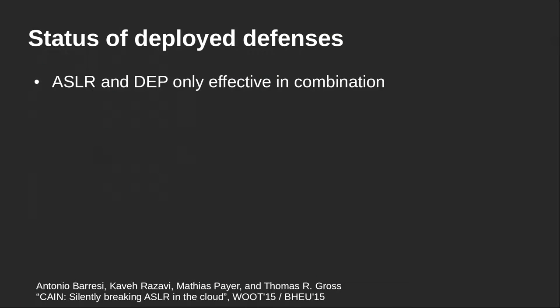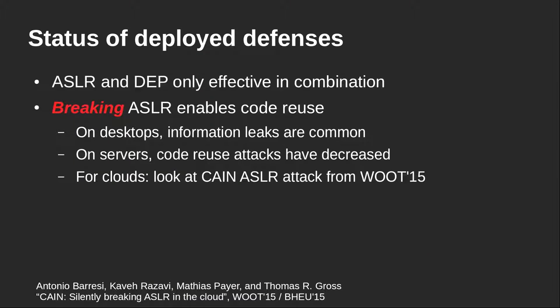ASLR and DEP are only effective in combination. If you break DEP, you can inject new code. If you break ASLR, you know the addresses of existing code and can stitch existing code locations together to re-execute already existing code. Information leaks enable you to infer the locations of specific pieces of code and stitch together known code locations to gain full code execution. On desktop systems, such information leaks are quite common.